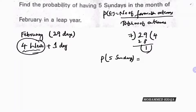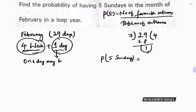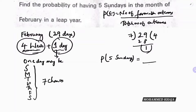Since every day occurs four times in the four complete weeks, whether we get a fifth Sunday depends on that one extra day. That extra day could be Sunday, Monday, Tuesday, Wednesday, Thursday, Friday, or Saturday — so there are seven possible outcomes. The favorable outcome is one (Sunday), so the total outcomes are seven and the favorable outcome is one.